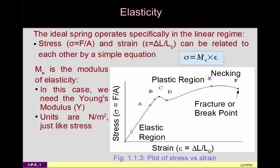Looking at the stress versus strain graph, there is a region for which stress and strain are linear with respect to each other — this is the elastic or linear region, which is what we're most concerned with for a spring. Between points A and C you stop getting a linear response, although you haven't necessarily damaged the spring. At point C you permanently deform the spring — that is the plastic region. Then there is a necking region and a fracture or break point; if you pull the spring hard enough, it will snap.